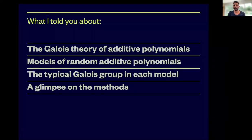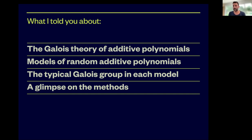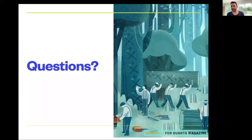To summarize: I covered the Galois theory of additive polynomials in three models. In the large finite field and large box models we get GLn(q) with probability one. In the restricted coefficient model we encounter obstructions — separability, irreducibility via the content, and determinant constraints — each occurring with positive probability. We can handle each one and describe exactly what the Galois group will be in each case, giving a complete result. Thank you.